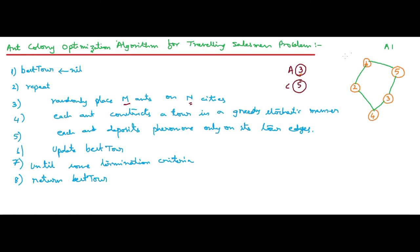The second ant moves from city 1 to city 4, to city 3, to city 2, then to city 5, and back to city 1. This is the route of the second ant. The third ant starts from city 1, reaches city 5, then city 3, city 4, city 2, and back to city 1. This is the travelling of ant 3.